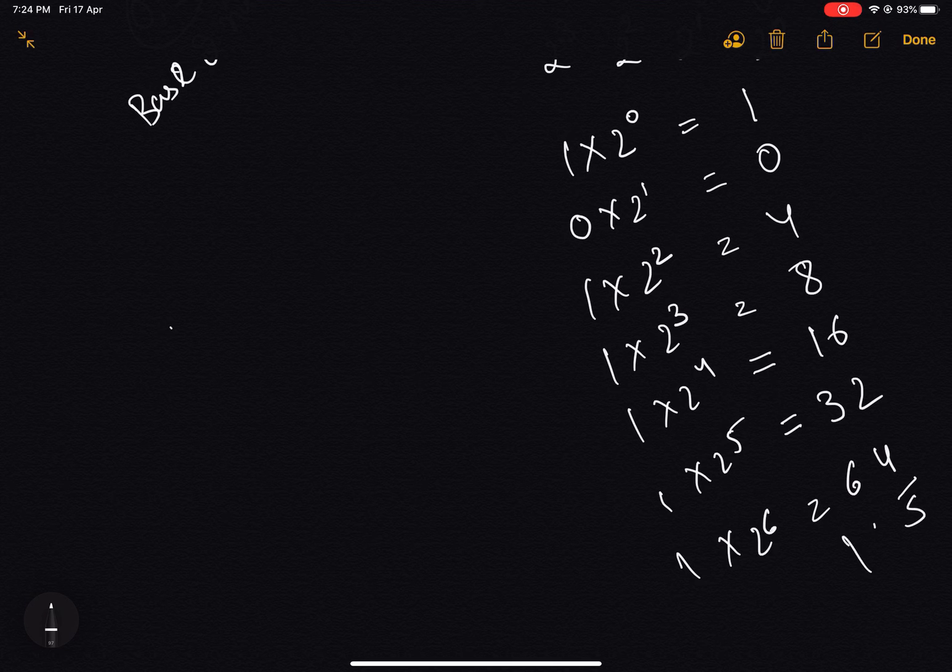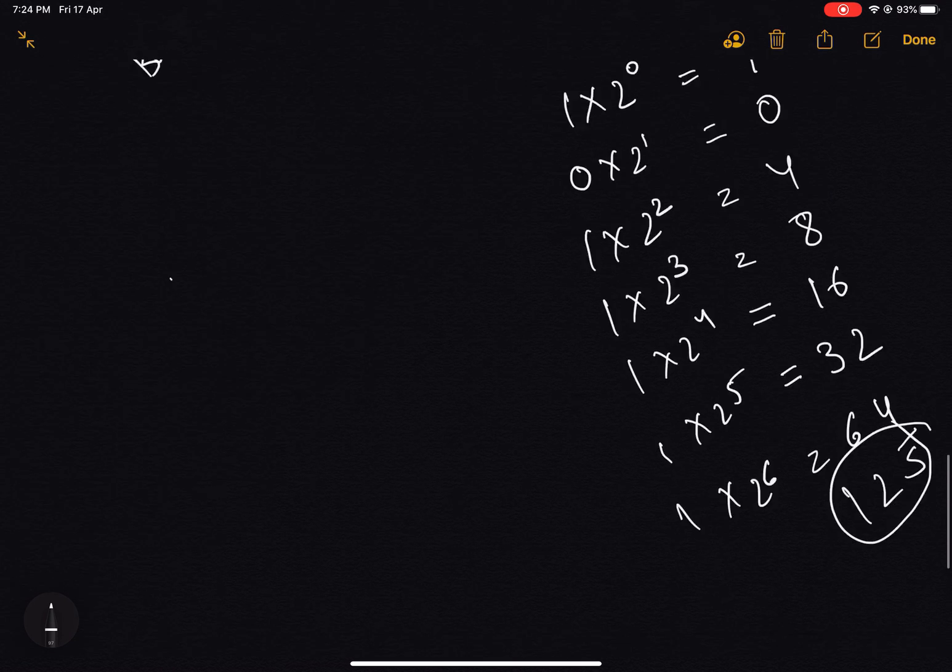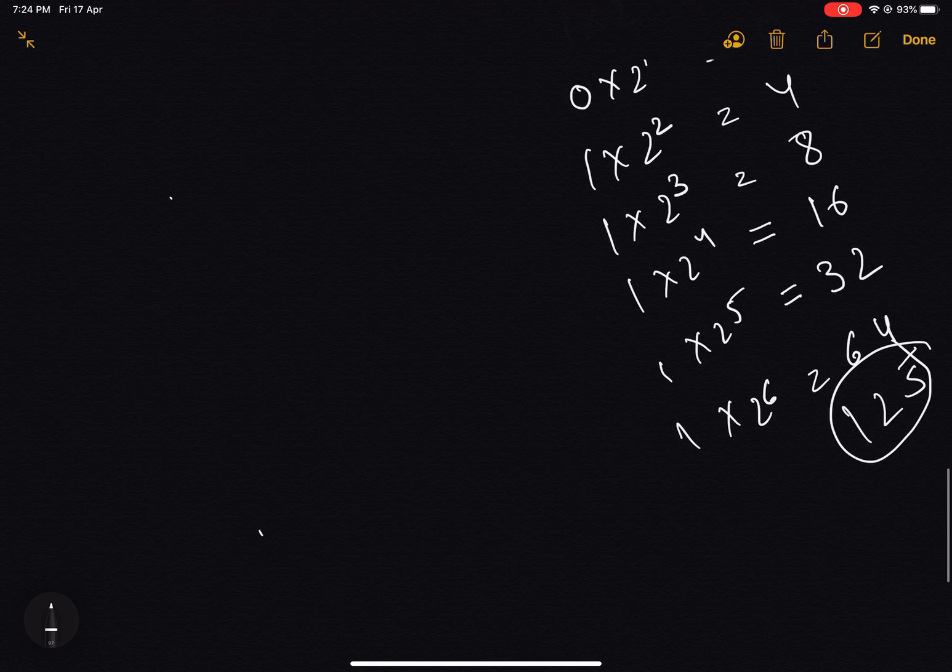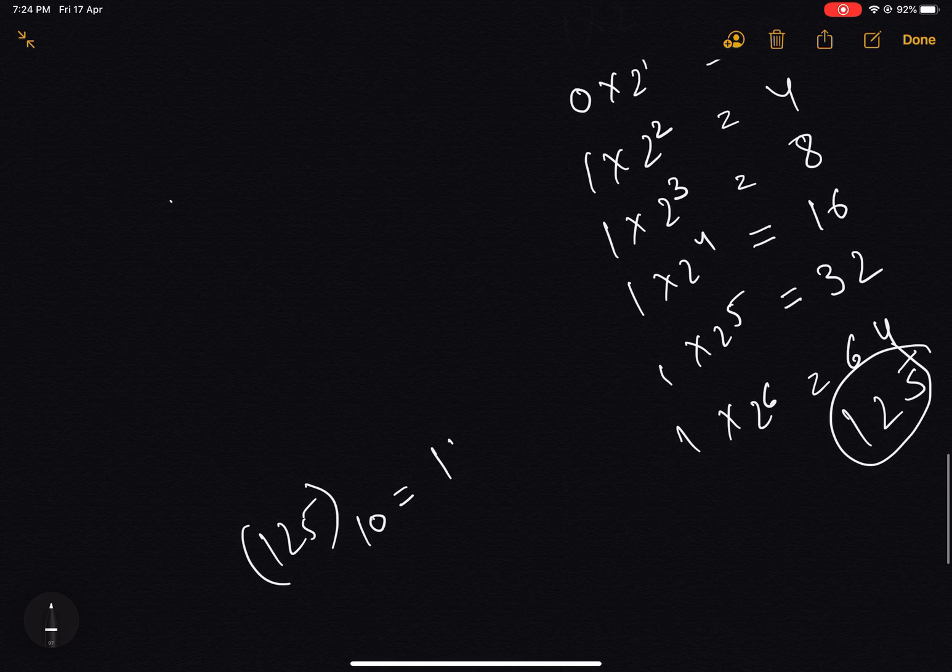And if I sum this expression it will evaluate to 125. So as we can see that if I want to write 125 which is in base 10 into binary number system, it will appear something like this.